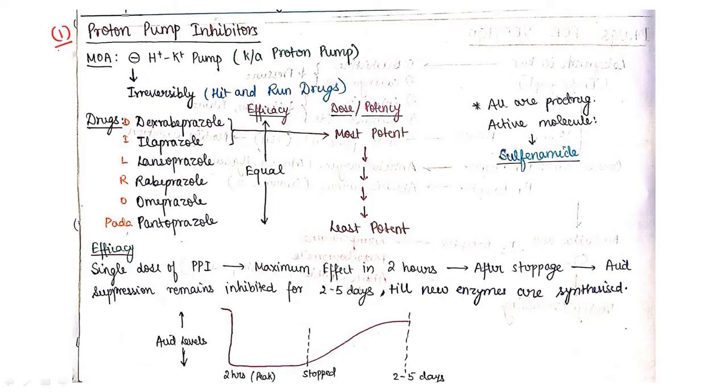First coming to the proton pump inhibitors. What is the mechanism of action of this proton pump inhibitor? It will inhibit your hydrogen potassium pump, that is also known as proton pump. This is basically irreversible inhibition of this pump. This proton pump inhibitor causes irreversible inhibition of this pump and these proton pump inhibitors are also hit and run drugs.